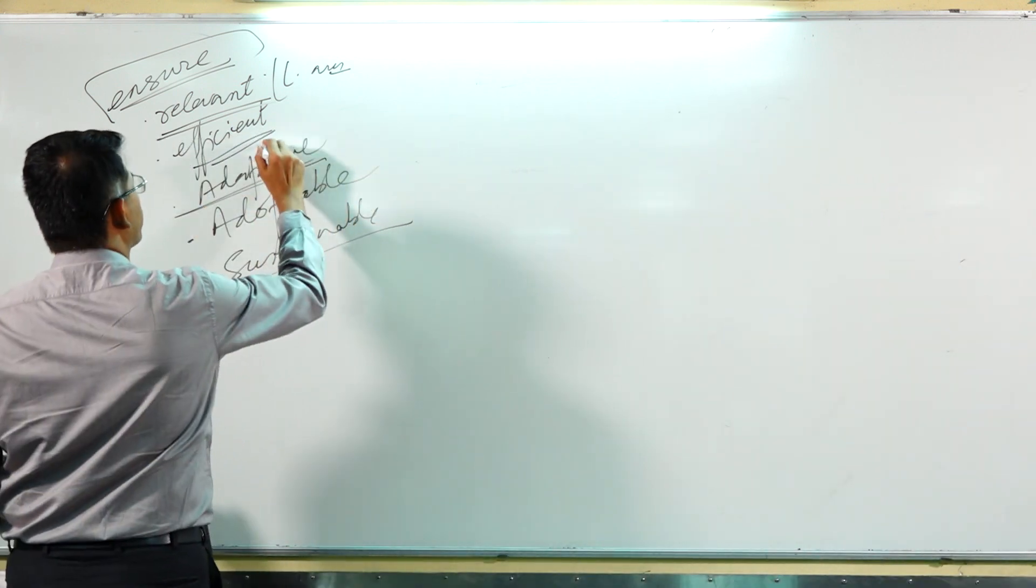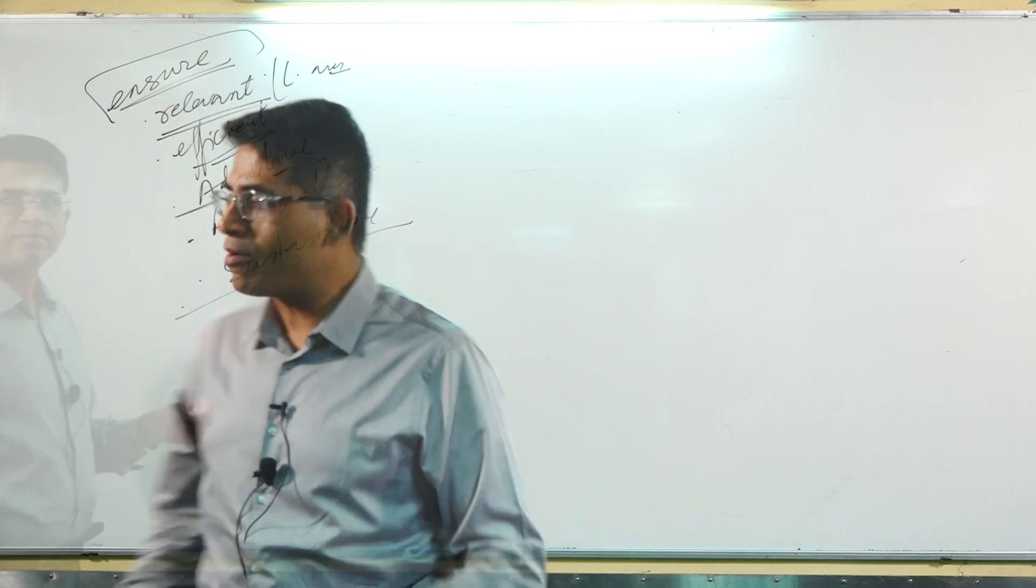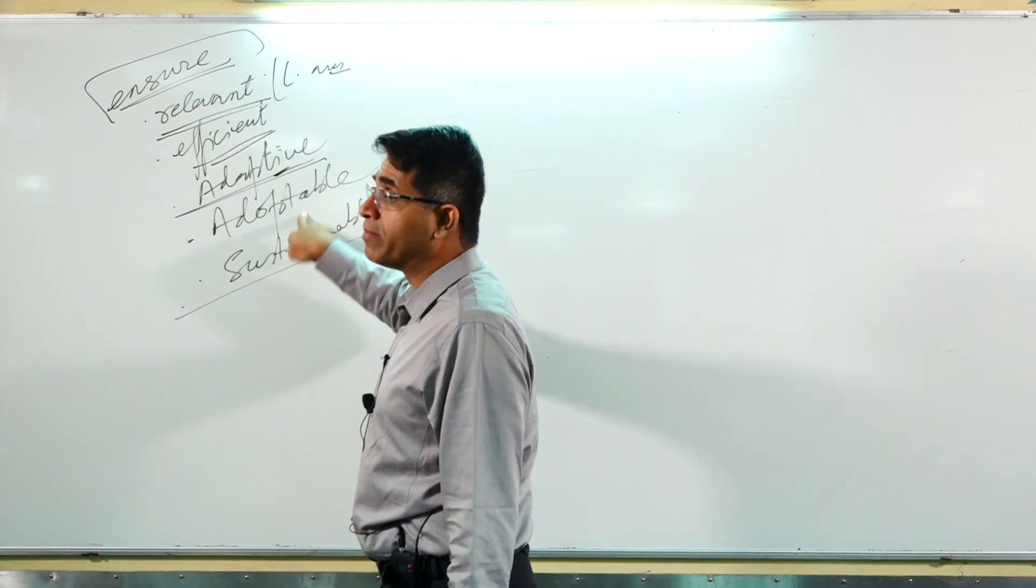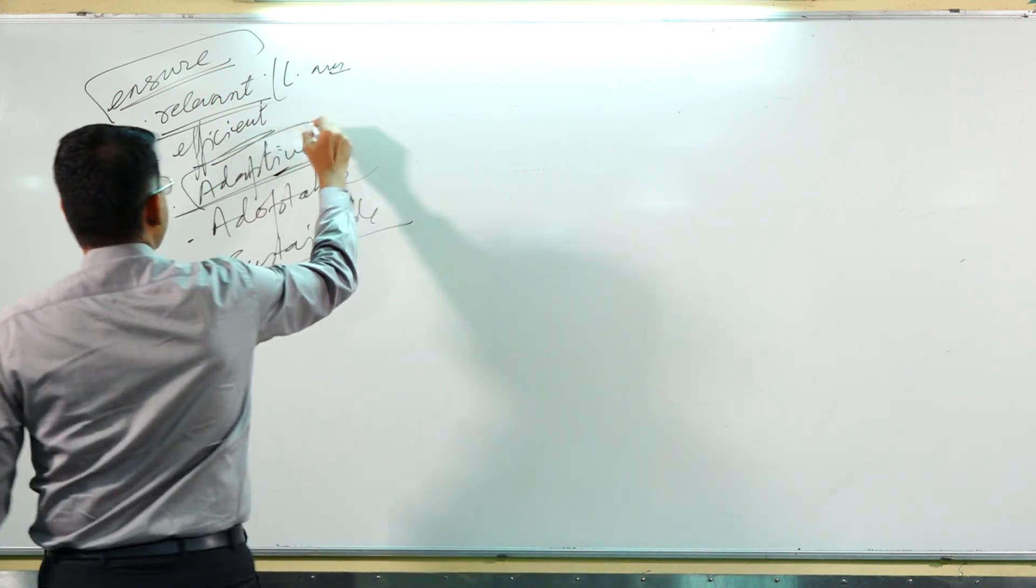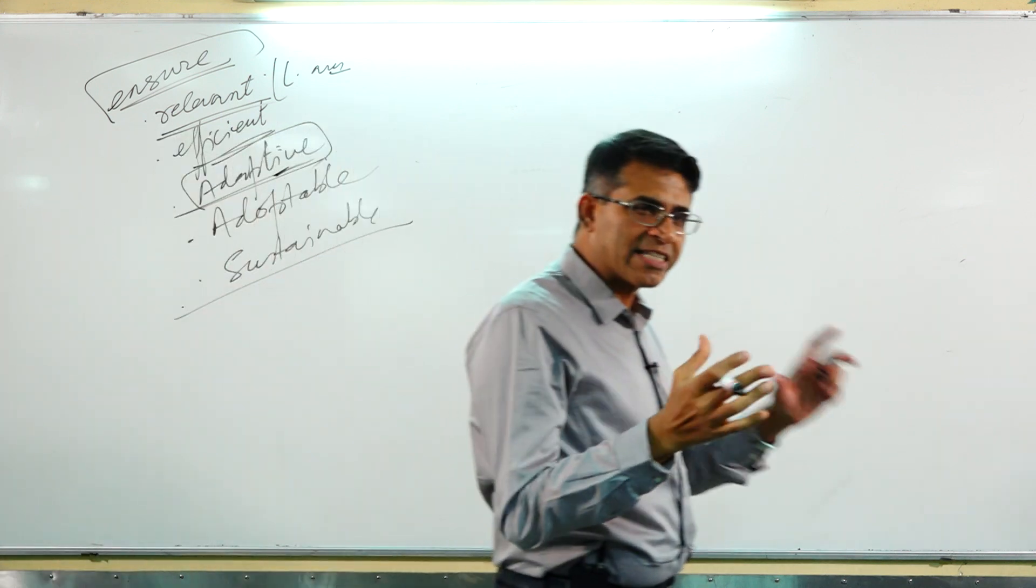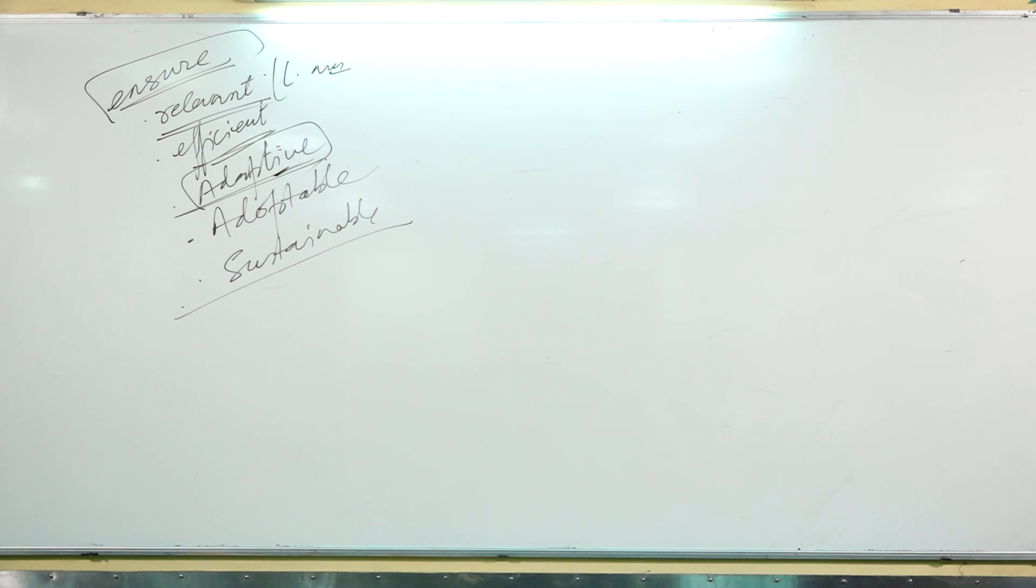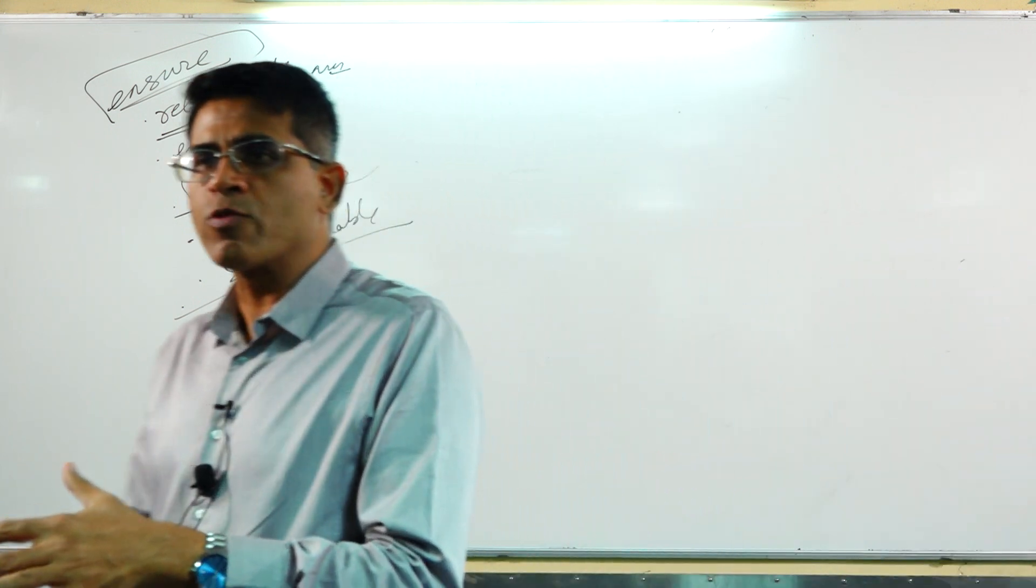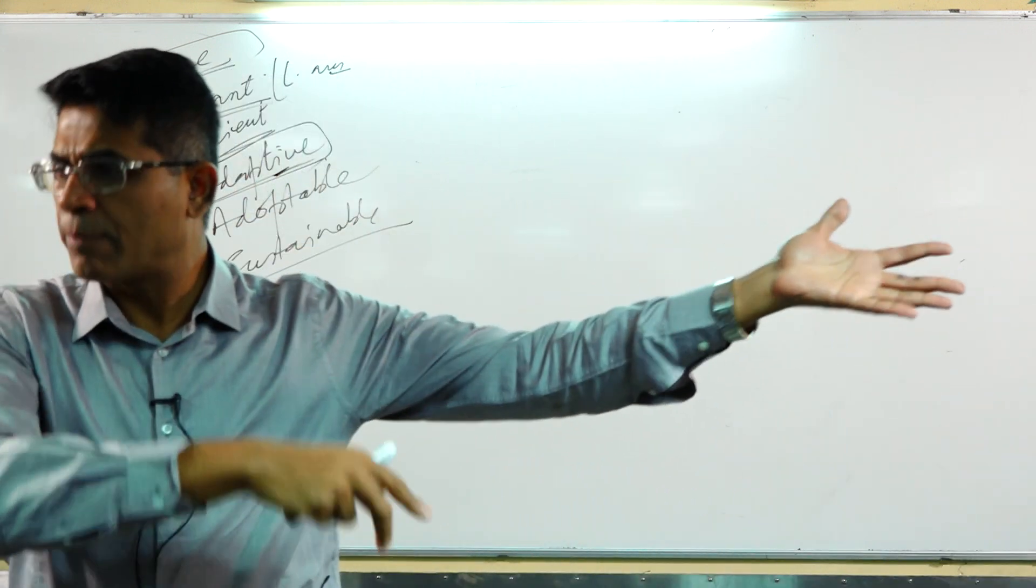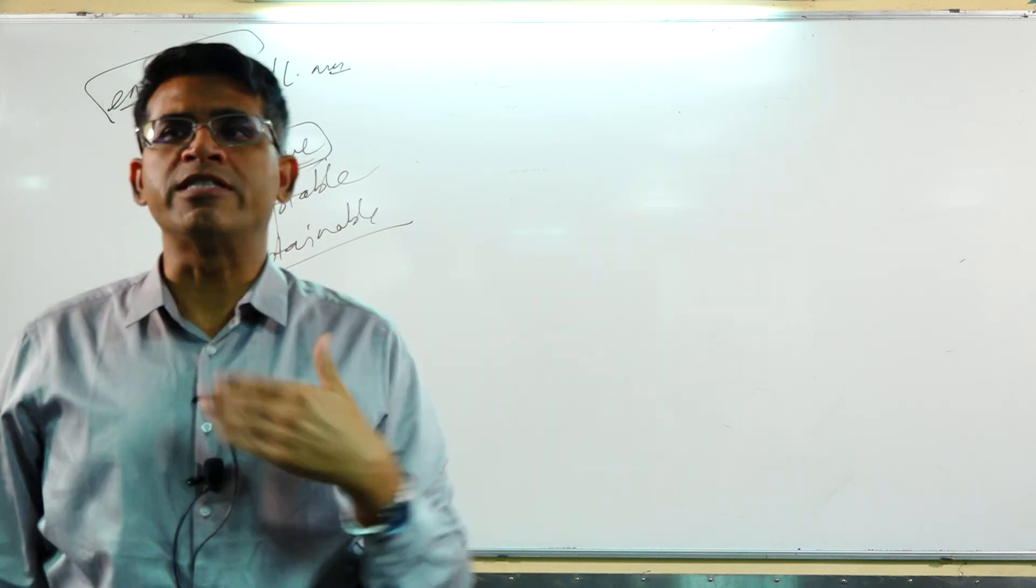They must be adaptive. How is adaptive word different from adoptable? Adaptable means it must be flexible because conditions change. You are solving in today's context. It cannot be the same as what we are doing maybe 20 years ago.